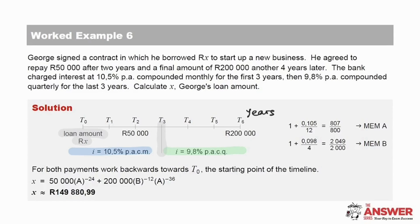Once you've established the interest rates, be efficient by using the memory function on your calculator. Save the increase factor with the 10.5% per annum compounded monthly into A and the increase factor with the 9.8% per annum compounded quarterly into B. So now we take the 50,000 and compound it back for 24 months. And then adding to that the 200,000 rand, we compound it back for 12 quarters, and then for 36 months. Make sure to practice these calculations on your calculator each time.